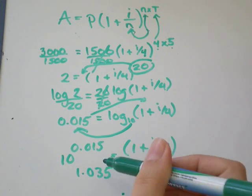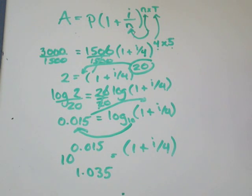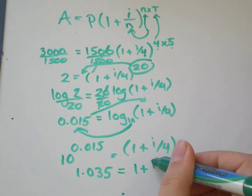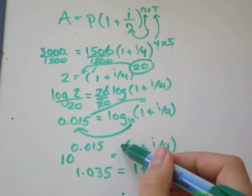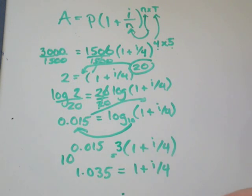And I would say keep at least 3 or 4 numbers after the decimal so that you don't get too much rounding error. And that is equal to 1 plus i over 4. I can drop my brackets because I'm not multiplying any number or anything on the outside of my brackets.